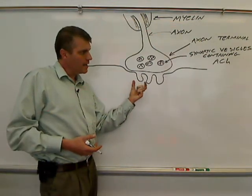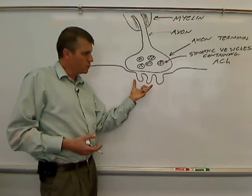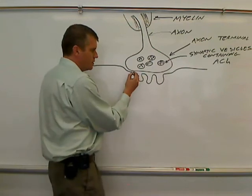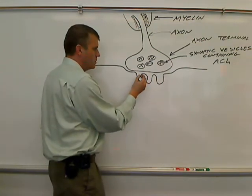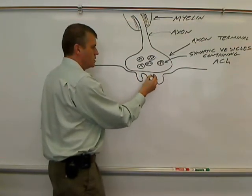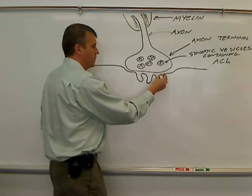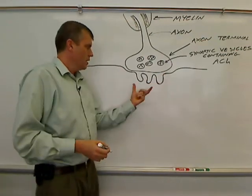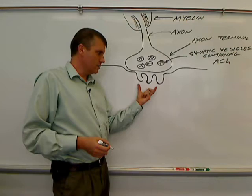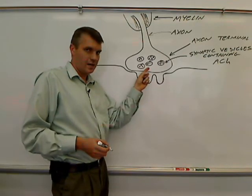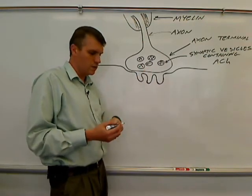And it has these junctional folds. That's what these are. These are junctional folds in this neuromuscular junction. The area containing the junctional folds is the area that's close to the axonal bouton or the axon terminal.